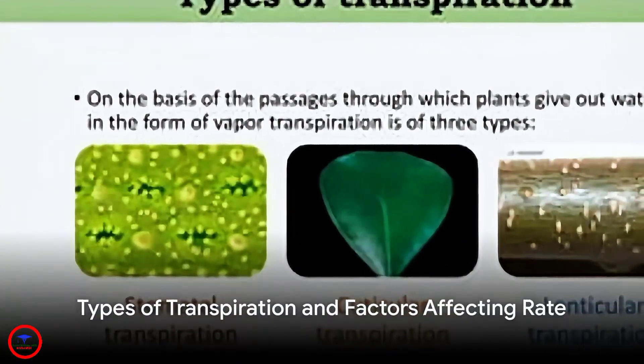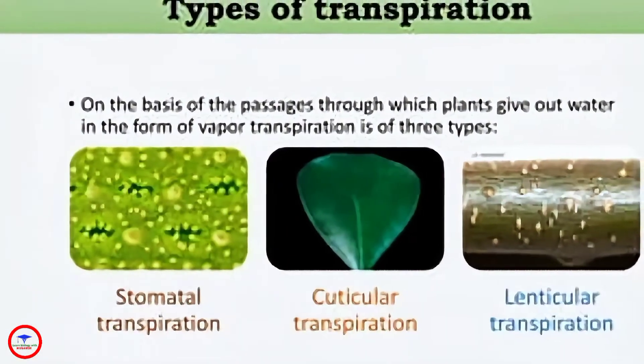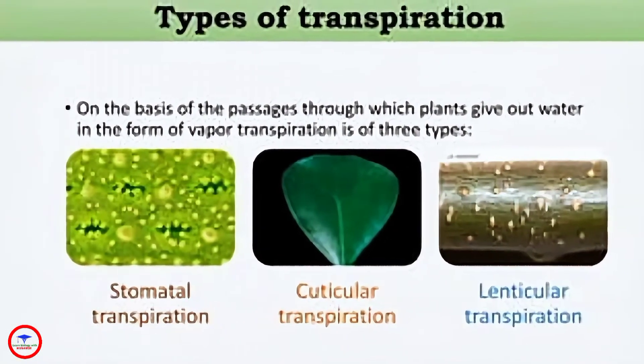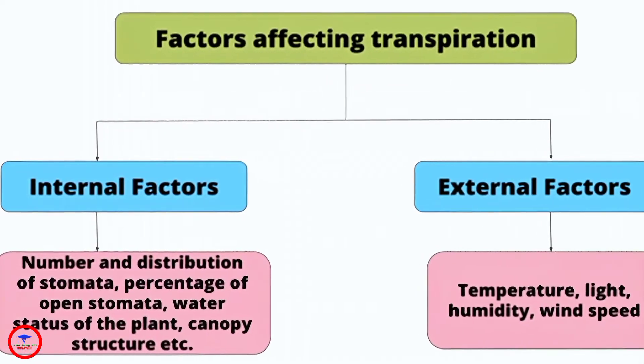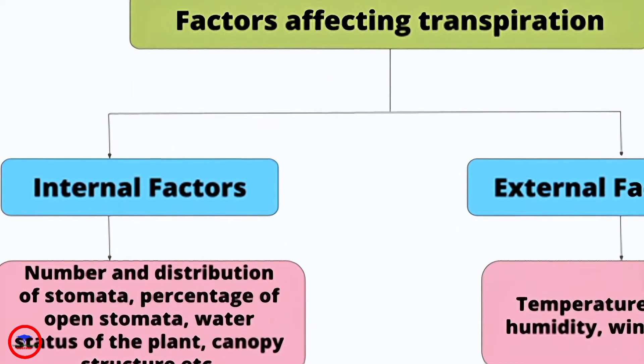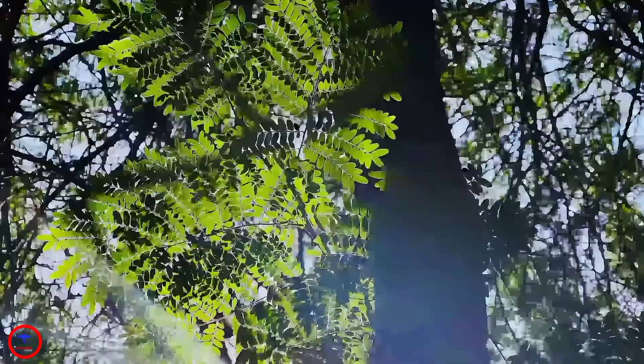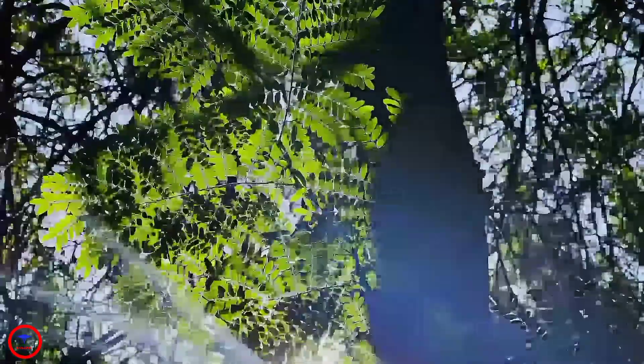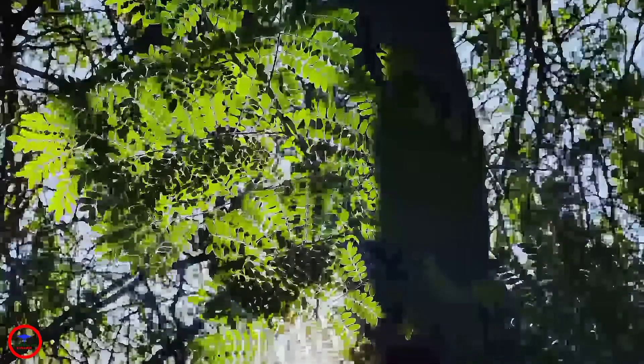Transpiration can be of three types: stomatal, cuticular and lenticular, with stomatal being the most common. Various factors, both plant-related and environmental, can affect the rate of transpiration. For example, high temperatures and wind speed can increase the rate of transpiration.